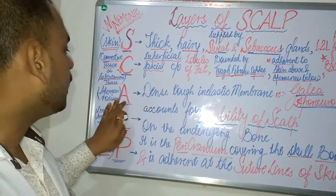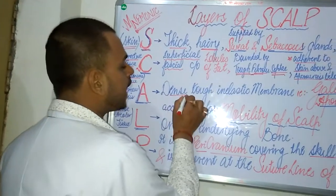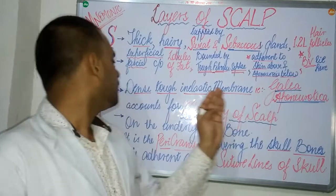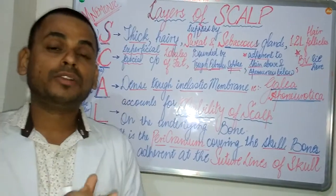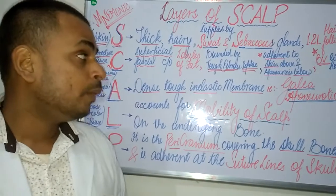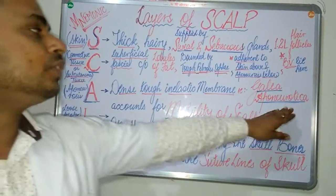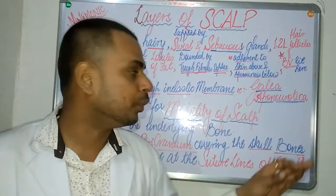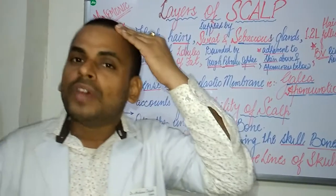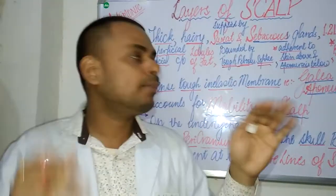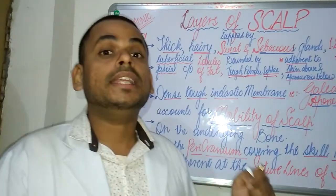The A of SCALP refers to the Aponeurosis, also known as the galea aponeurotica. This is a dense, tough, inelastic membrane. The galea aponeurotica accounts for the mobility of the scalp — when we move or press our scalp, that mobility is imparted by the aponeurosis or galea aponeurotica.